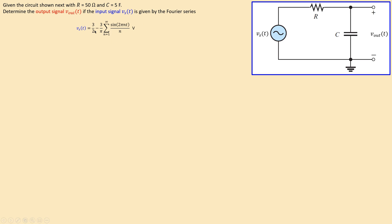The input VS is given by a Fourier series. We have a DC term of 1.5 volts, and the AC terms are determined by a summation where n starts at 1 and goes to infinity using integers: 1, 2, 3, and so on. We will use this input signal expression to determine the output voltage using the Fourier series.